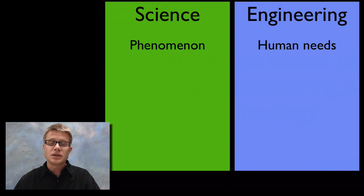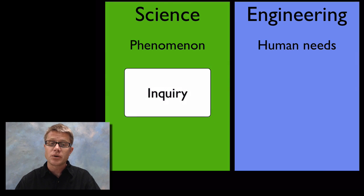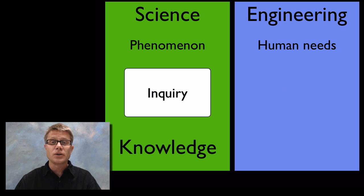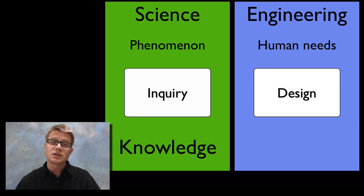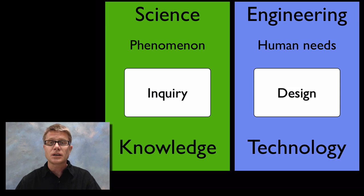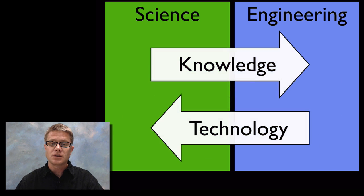If we think about what science is, remember it's the study of phenomena in the universe. We're using this inquiry process to come up with new knowledge to explain the way the world works. Engineering is slightly different. We're looking at human needs and how we can use design to come up with solutions which eventually become something called technology. And it makes our lives better. Knowledge and technology is kind of the bridge between science and engineering.